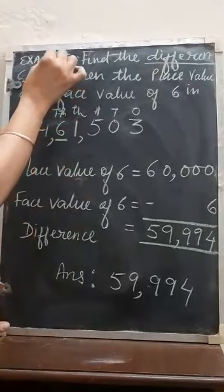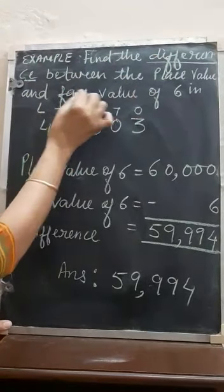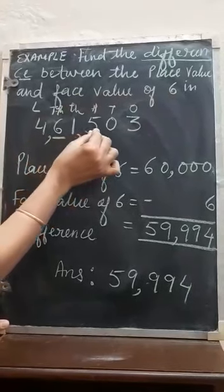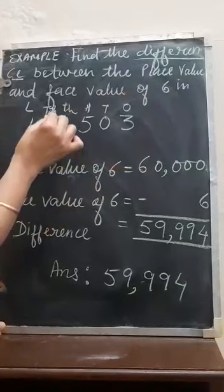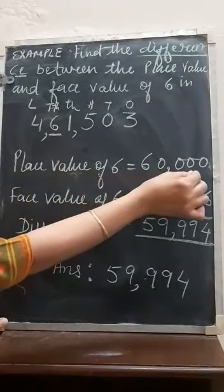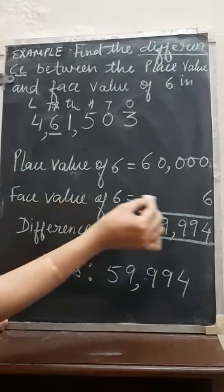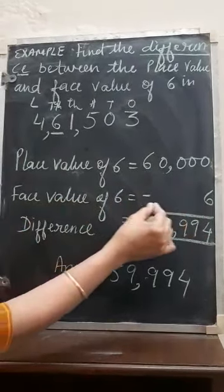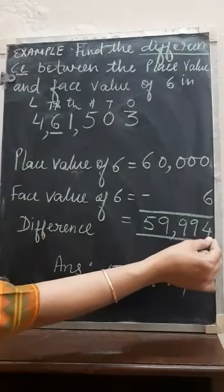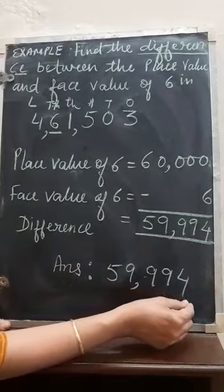Now in this example, find the difference between the place value and face value of 6 in the numeral 46,1503. Here 6 is at the ten-thousands place, so the place value of 6 is 6 multiplied by 10,000, which is 60,000. The face value of the digit remains the same — that is 6. You have to find the difference by subtraction, and after doing subtraction you get 59,994.